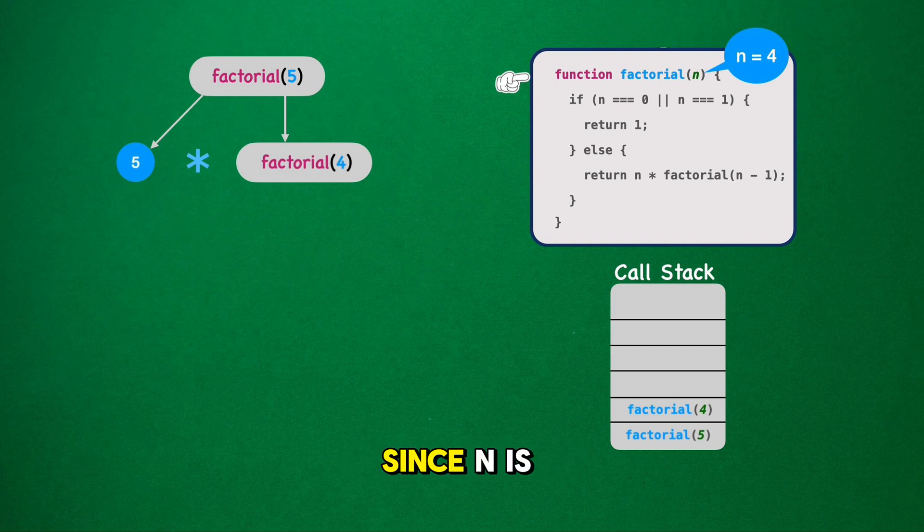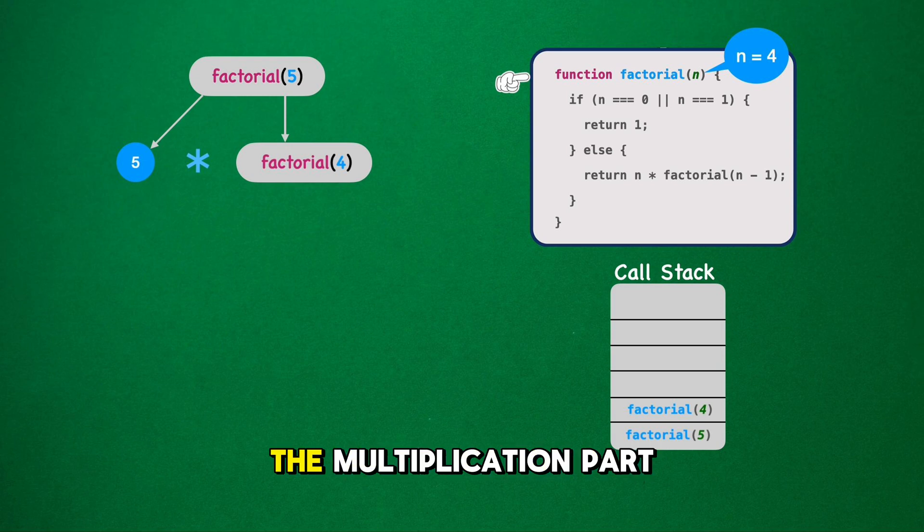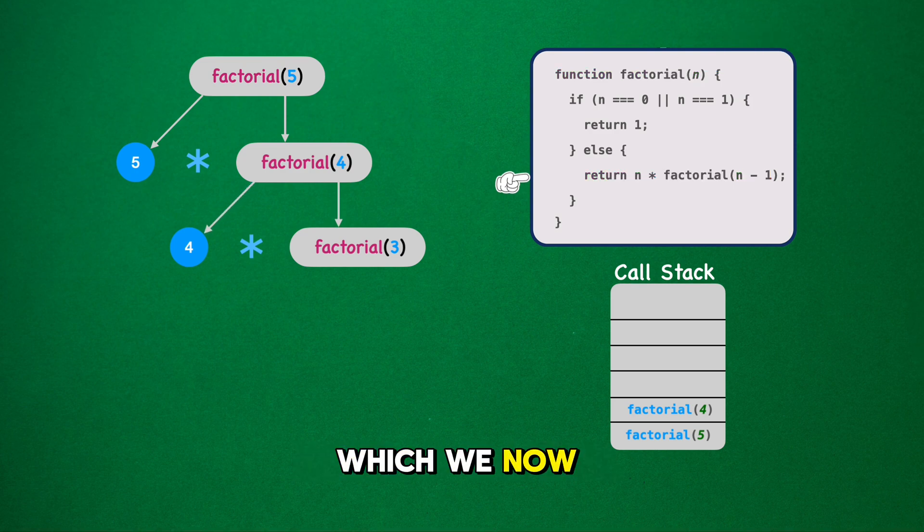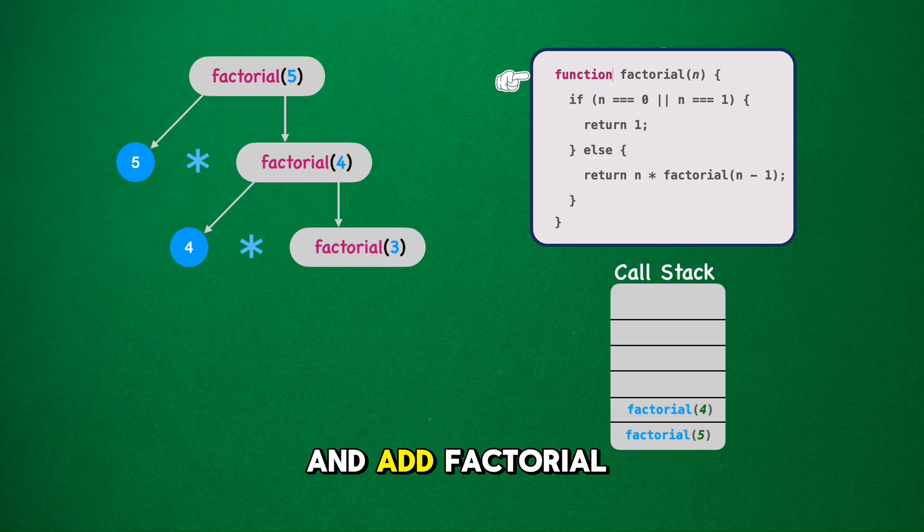In the function, since n is not 1 or 0, we move to the multiplication part, 4 asterisk factorial 3. We place the number 4 in our visuals, ready to be multiplied by the result of factorial 3, which we now need to evaluate. So we call factorial 3, and add factorial 3 to the call stack, stacking it above factorial 4.